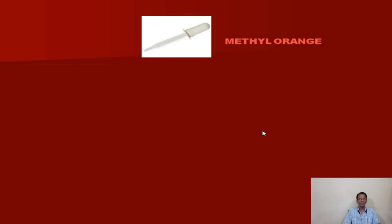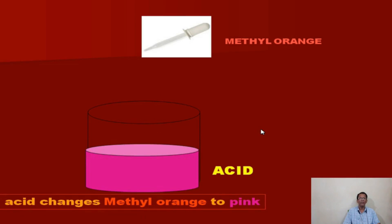When methyl orange indicator is added to acid, you see the change — it changes methyl orange to pink, that is red. Methyl orange changes to red in acidic medium.